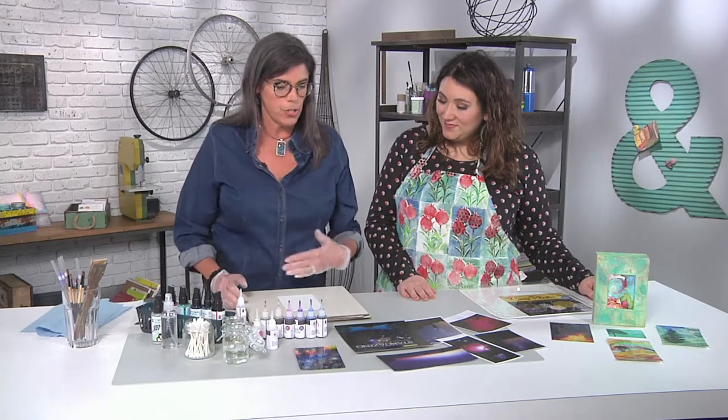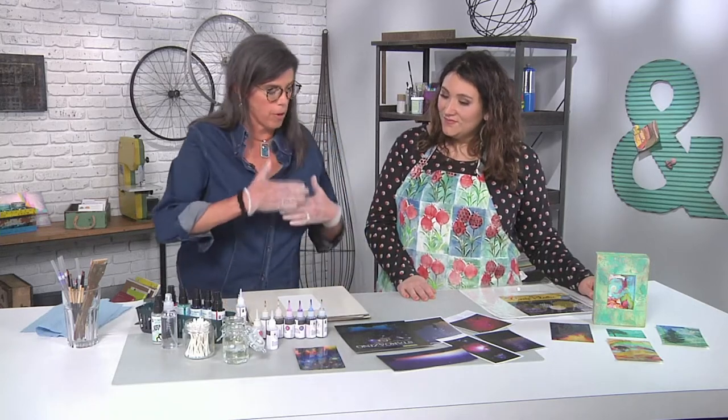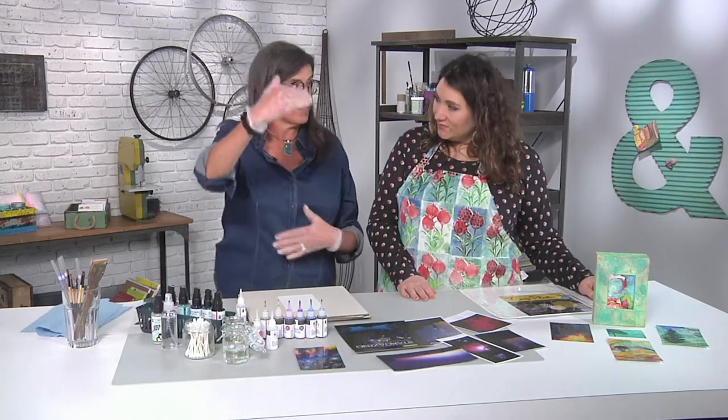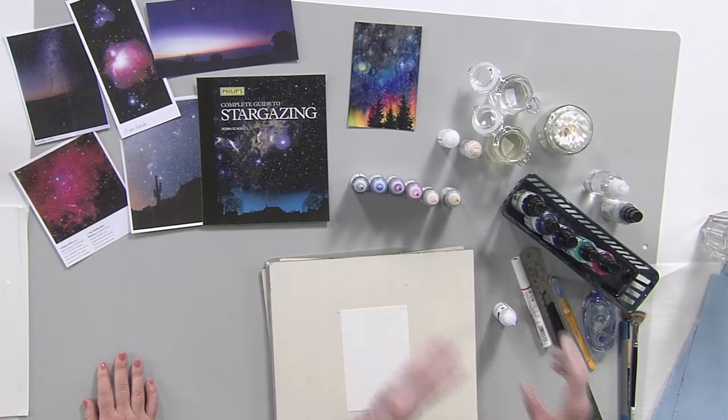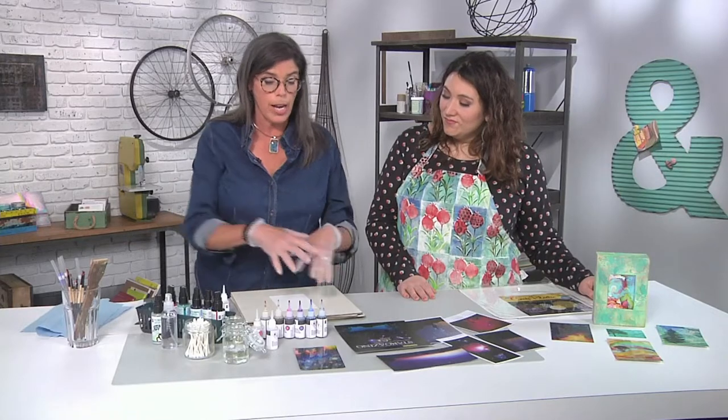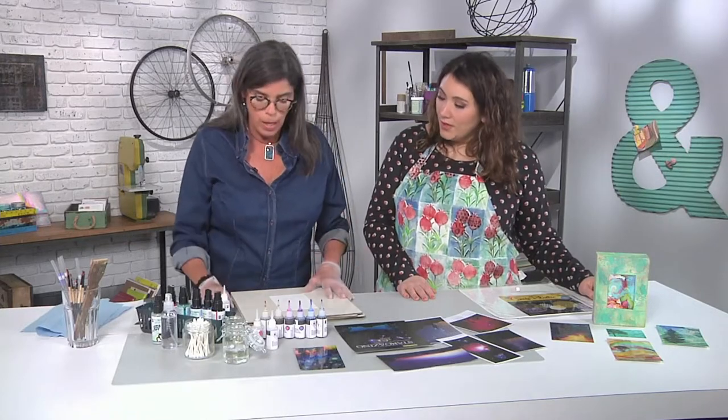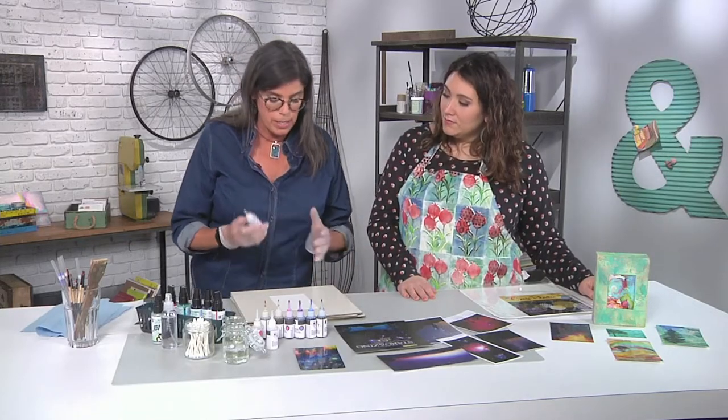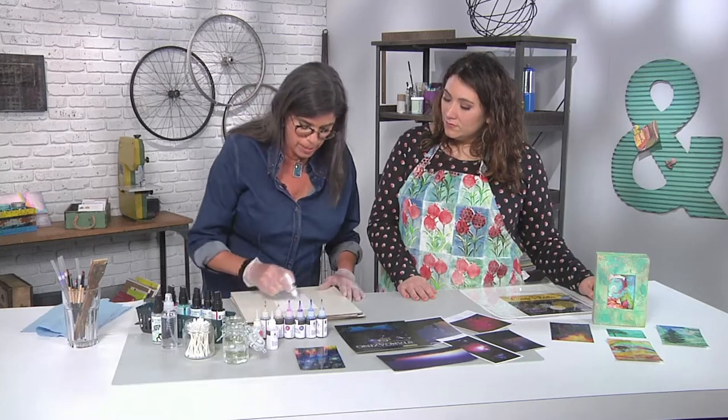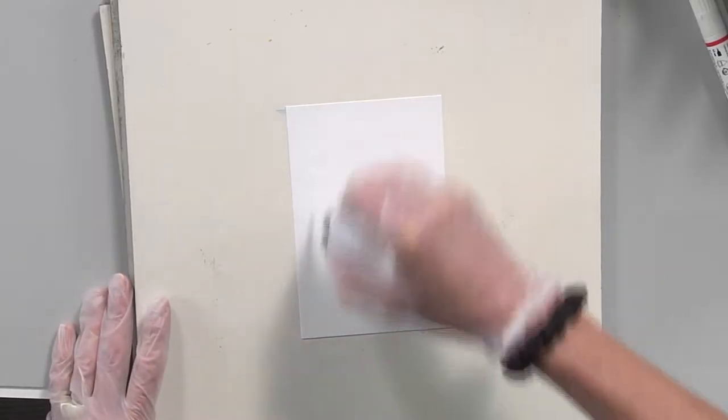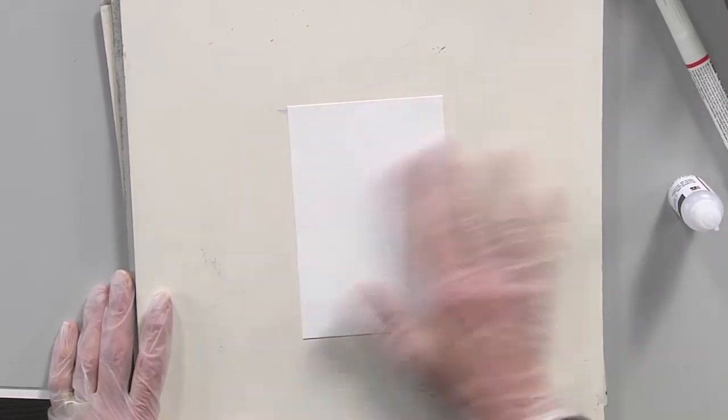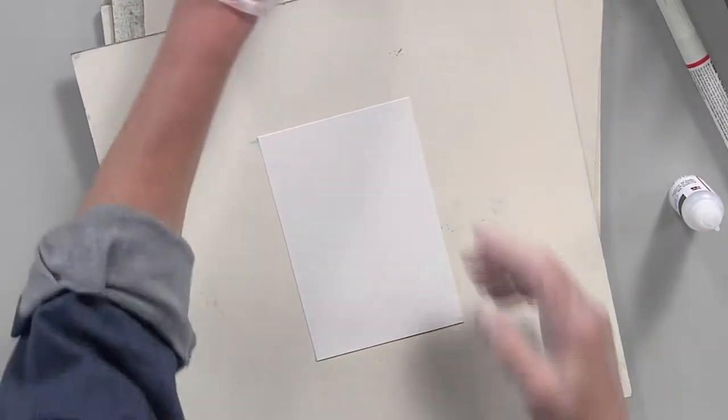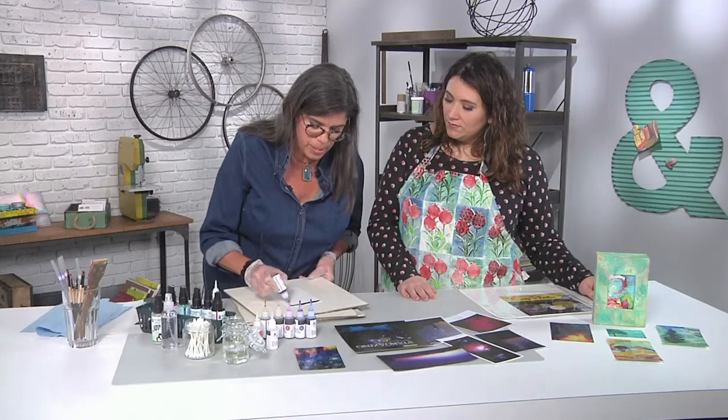My goal is to get that gradation from the horizon line where the sun is setting up to that deep dark black sky. To do that, I have to work pretty quickly. Alcohol inks dry very quickly, so you've got to have everything open, ready to go. I'm going to start with the extender. Extender extends your inks obviously, but it also helps things blend and flow. I'm squirting it on at random and spreading it around with my finger.